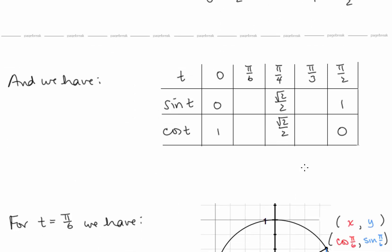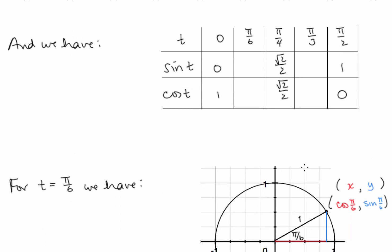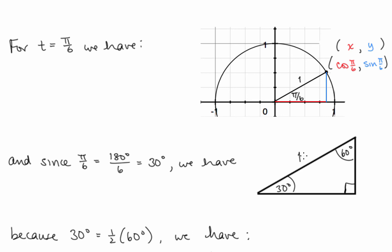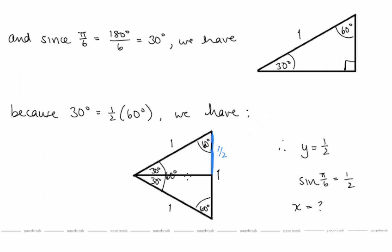Now our table has the π/4 values. Let's look at t equals π/6. Same idea — we make a right triangle. The hypotenuse is 1. We have a π/6 angle, which is 30 degrees, so the opposite angle is 60 degrees. Because 30 is half of 60, we have half of an equilateral triangle. The equilateral triangle has all sides equal to 1, so the blue side — the y value — equals 1/2, since it's half of that full side. So sine of π/6 equals 1/2.